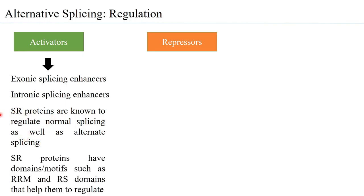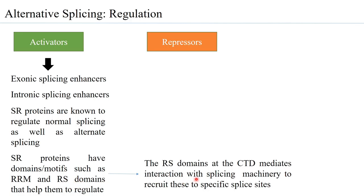SR proteins have several domains, two of which are common in alternative splicing: the RNA recognition motif and the arginine-serine (RS) domain, which contains conserved arginine and serine residues. The RS domain, present at the C-terminal of SR proteins, has been reported to bind to the splicing machinery and recruit it to specific splice sites.